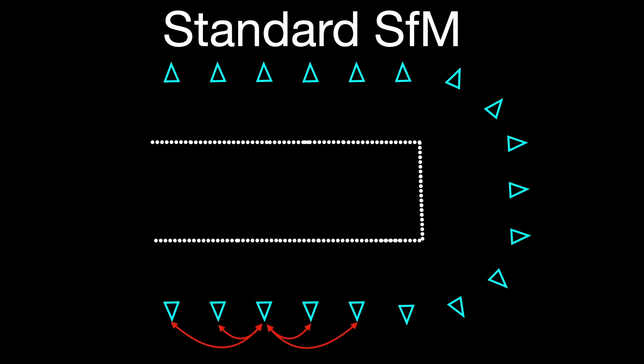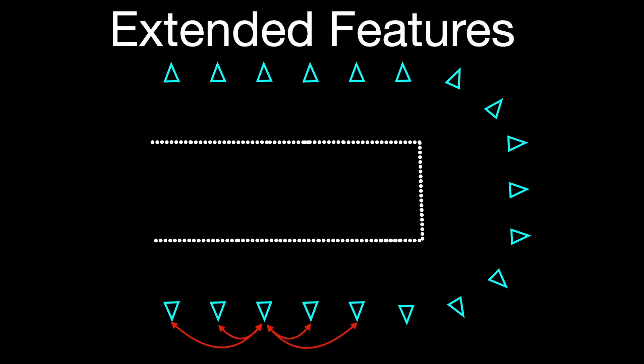Our method addresses drift through what we call extended features, which can be matched across frames that see totally different parts of the scene, allowing us to enforce pose constraints on pairs of frames that are arbitrarily distant.